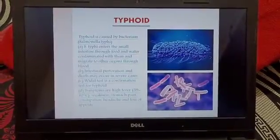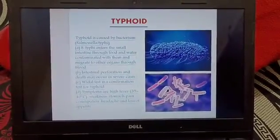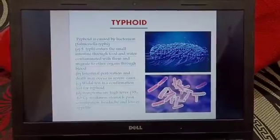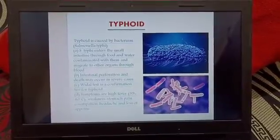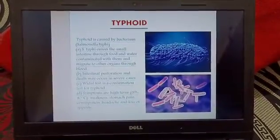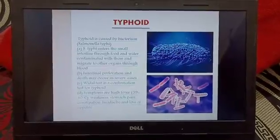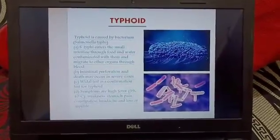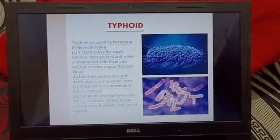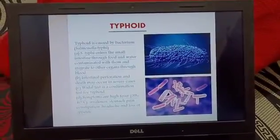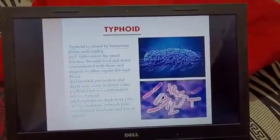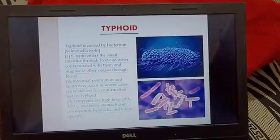Now we discuss about bacterial diseases. The first is typhoid, which is caused by the bacterium Salmonella typhi. It mainly affects the small intestine and from there it moves on to other organs. In severe cases it also causes intestinal perforation. Symptoms include severe high fever of 39 to 40 degrees Celsius and stomach pain.